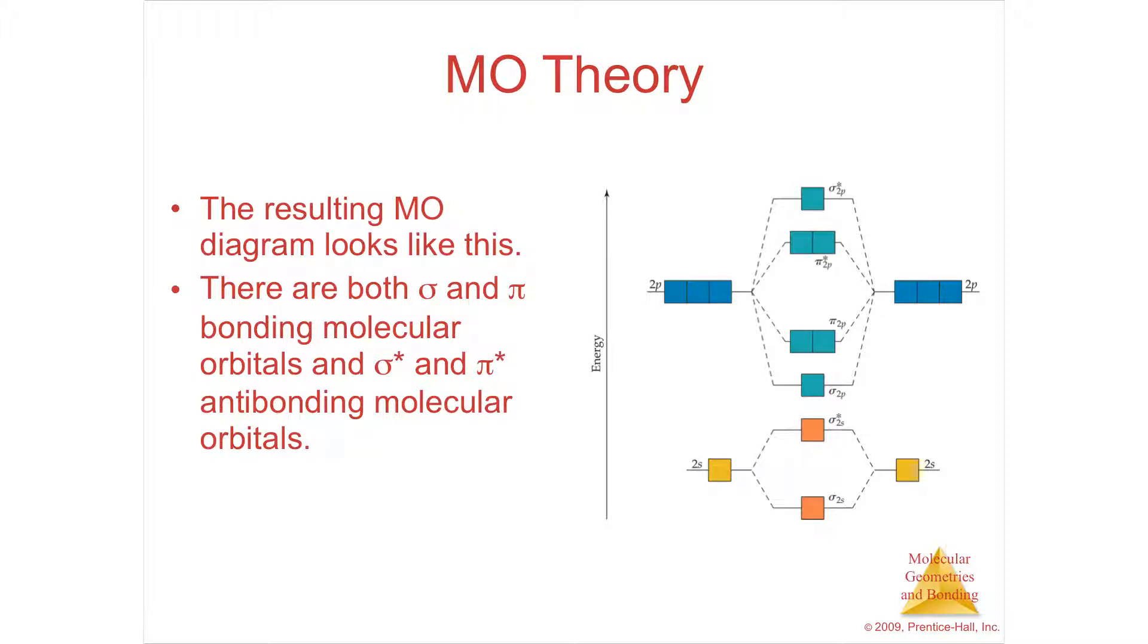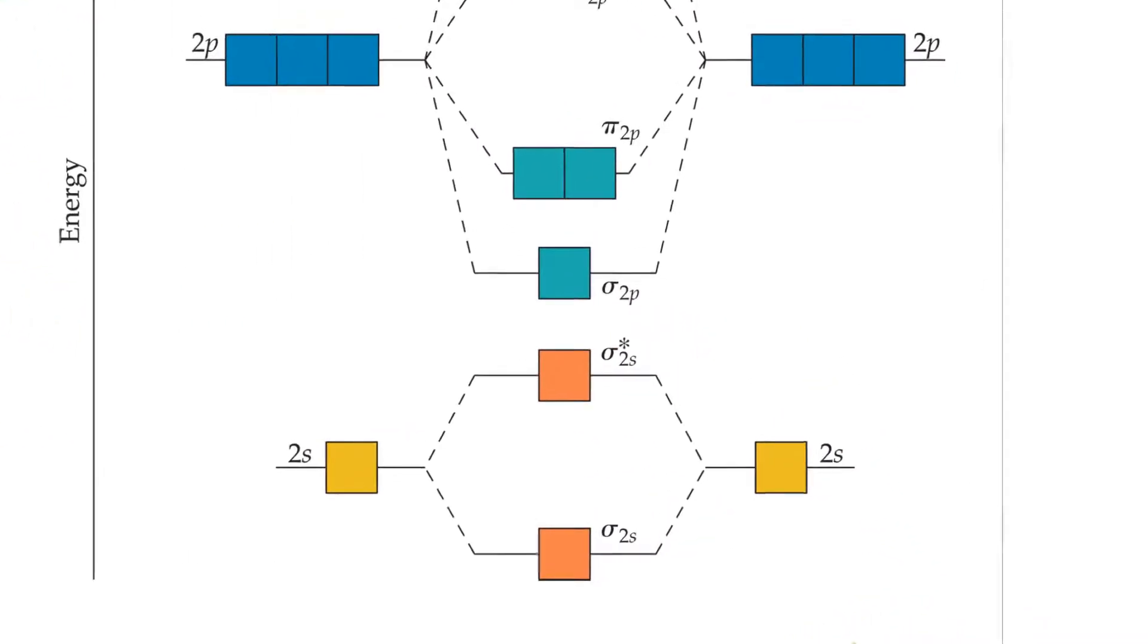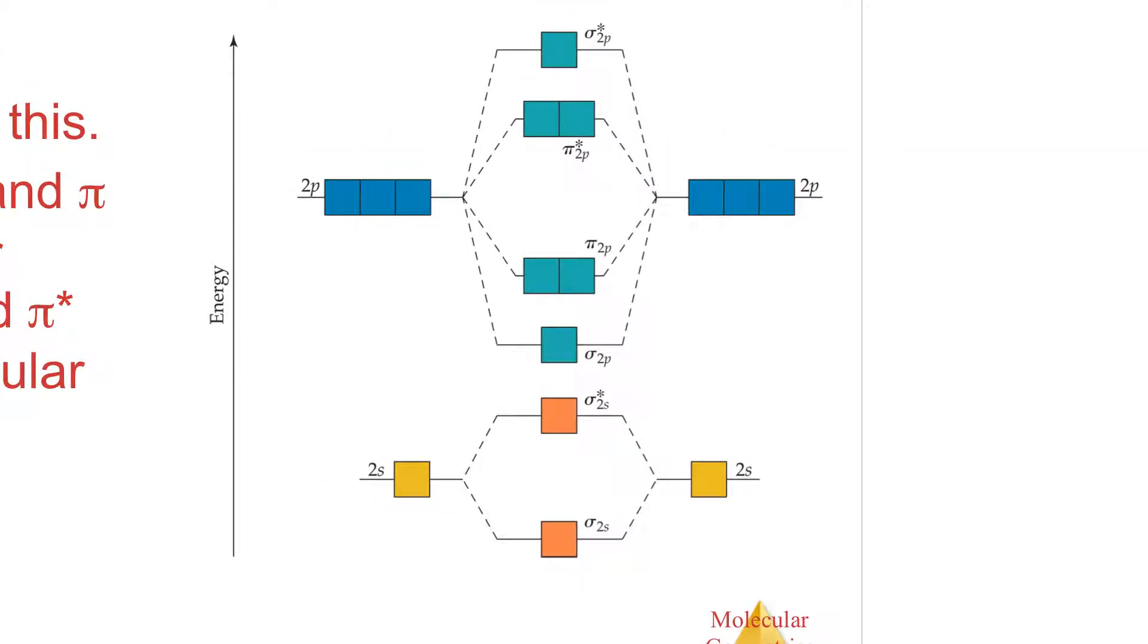Now the energy diagram. You can see the 2s, the ones forming 2s orbitals, are going to make a sigma 2s and a sigma star 2s, the bonding and antibonding orbitals. Then the p's are going to be in three directions. The ones that are end to end, coming into each other, that's forming a sigma bond, a single bond, so it's going to have the lowest energy, sigma 2p, and then its highest energy will be sigma star 2p.